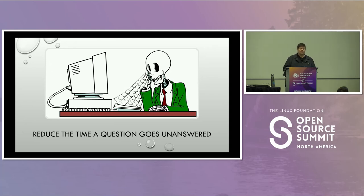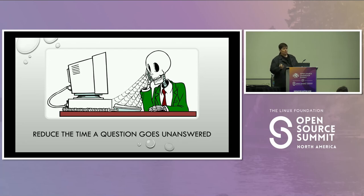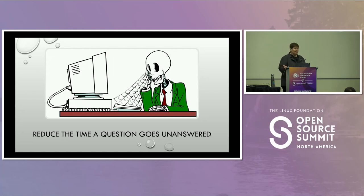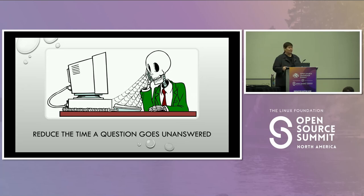Designate people or maintainers to monitor chats and mailing lists — maybe have a weekly rotation where people are specifically tasked with ensuring questions are getting answered. If you're assigned that task and don't know the answer, acknowledge that you saw the question. If you can't immediately answer because you're working on something else, let them know you've seen it and will get back to them. You can also reduce overhead by developing a chatbot that points people directly to the relevant documentation.